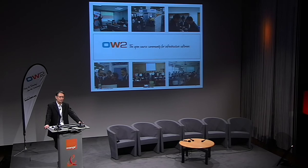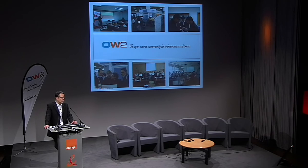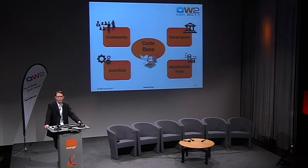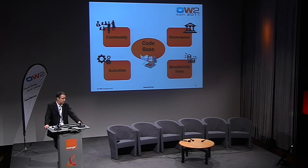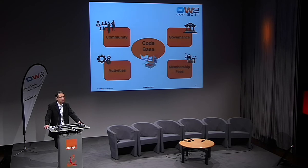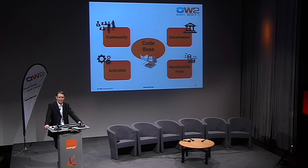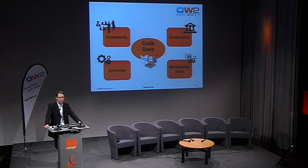In this context, we are the infrastructure — the open source infrastructure community. That's what we concentrate on and what we do. Now, who and what are we, and how are we organized? This is OW2 in one picture. We start with a code base at the center — we do not exist without the code base. That code base is developed by a community, which works within the framework of activities. Everything runs smoothly because of our open source governance, and we keep our independence because our members pay their fees.